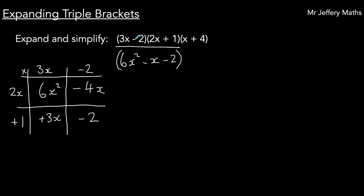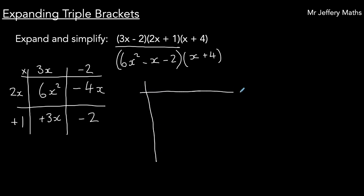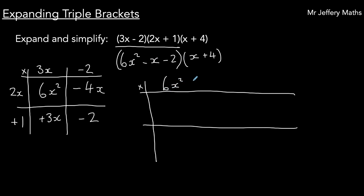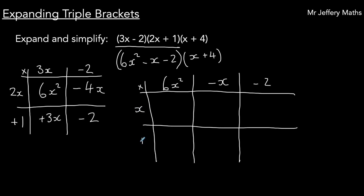So I've expanded and simplified the first part, and what I then need to do is multiply that by x plus 4. I'm going to do the same thing again on a slightly larger scale — draw out a multiplication grid, with 6x squared minus x minus 2 along the top, and multiply that by x plus 4.